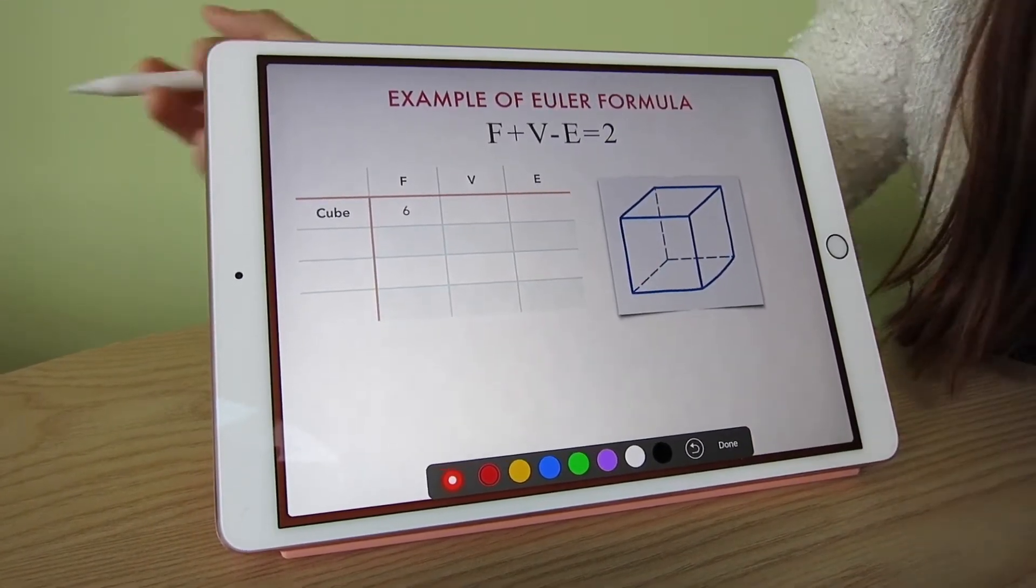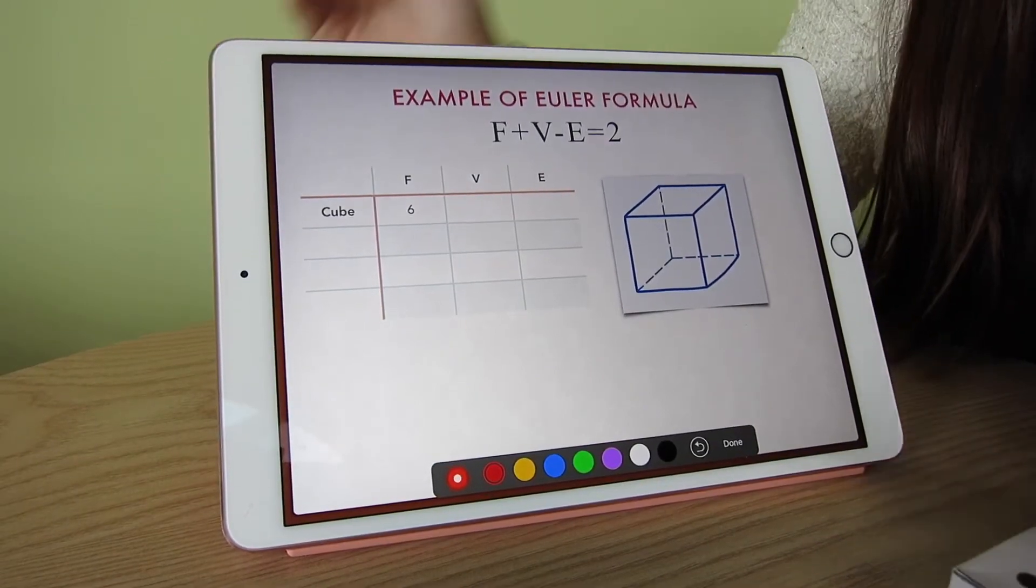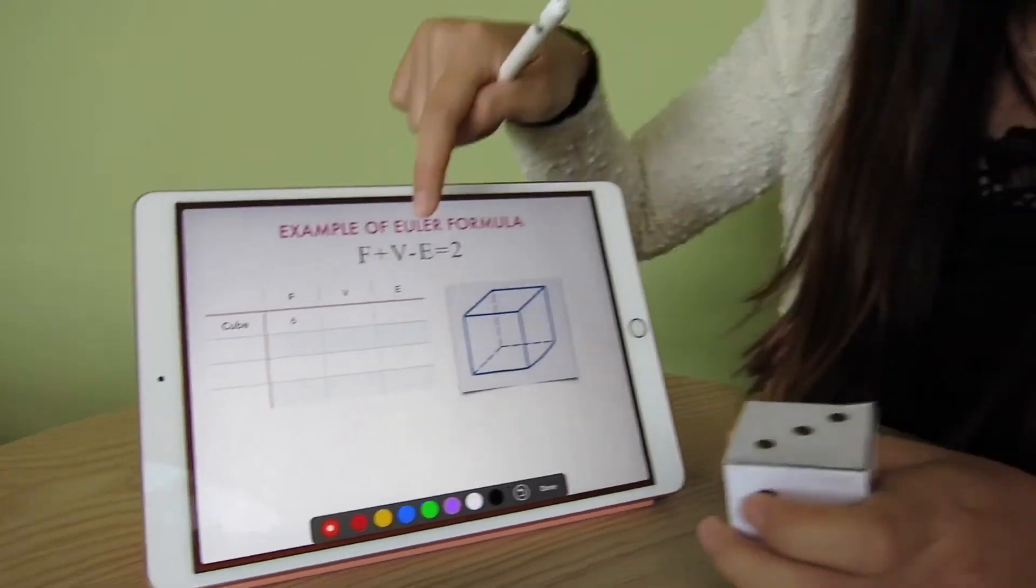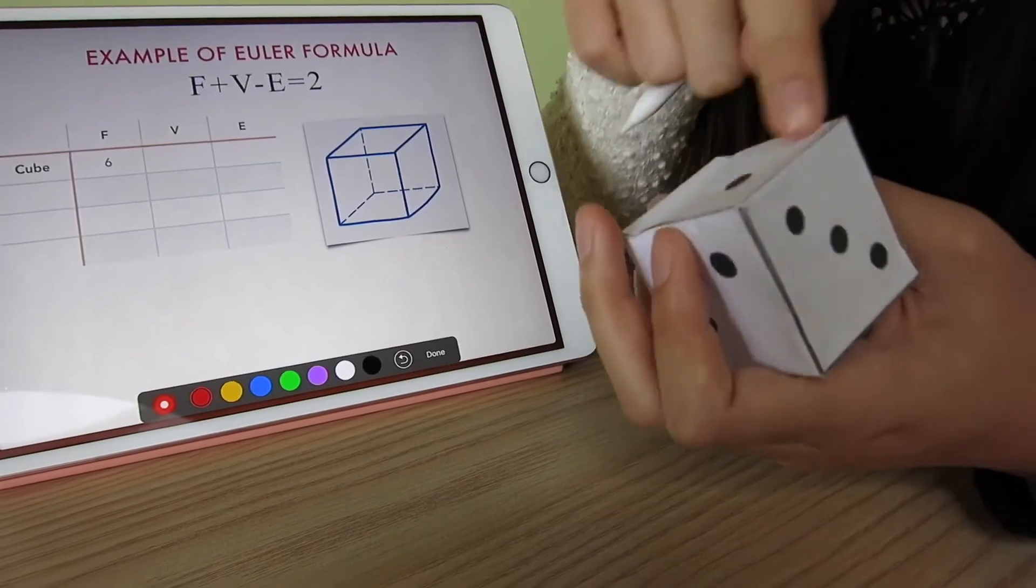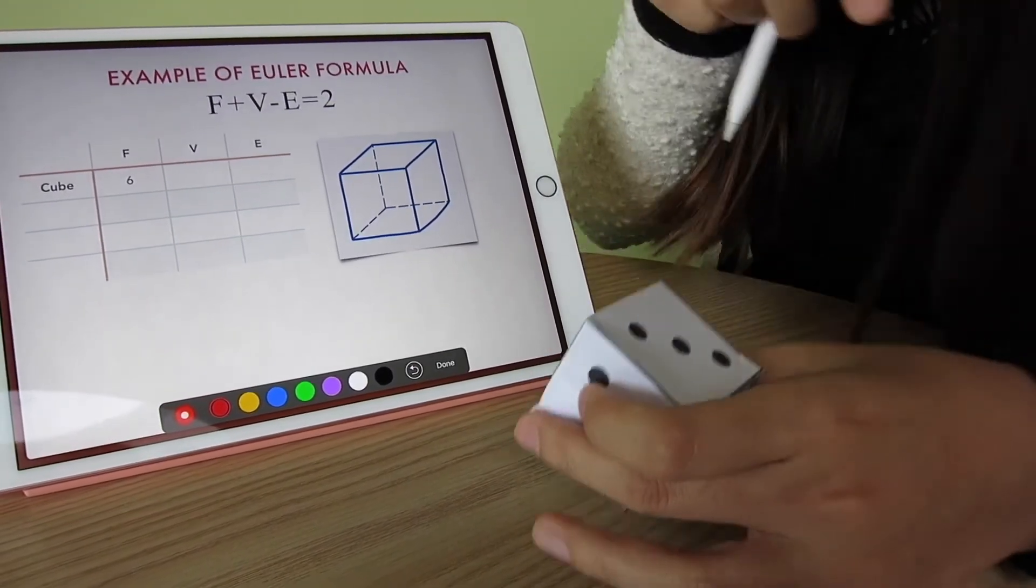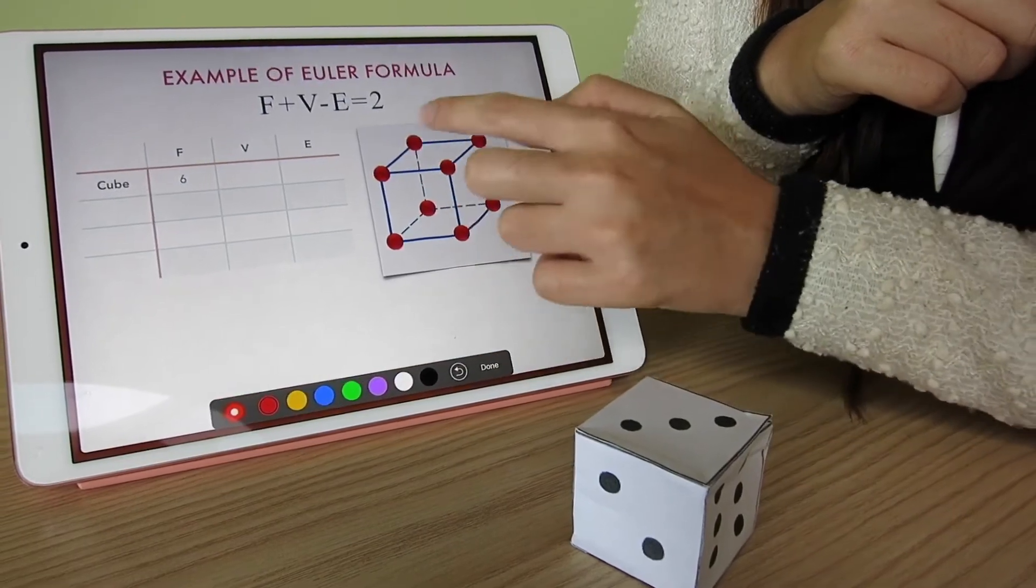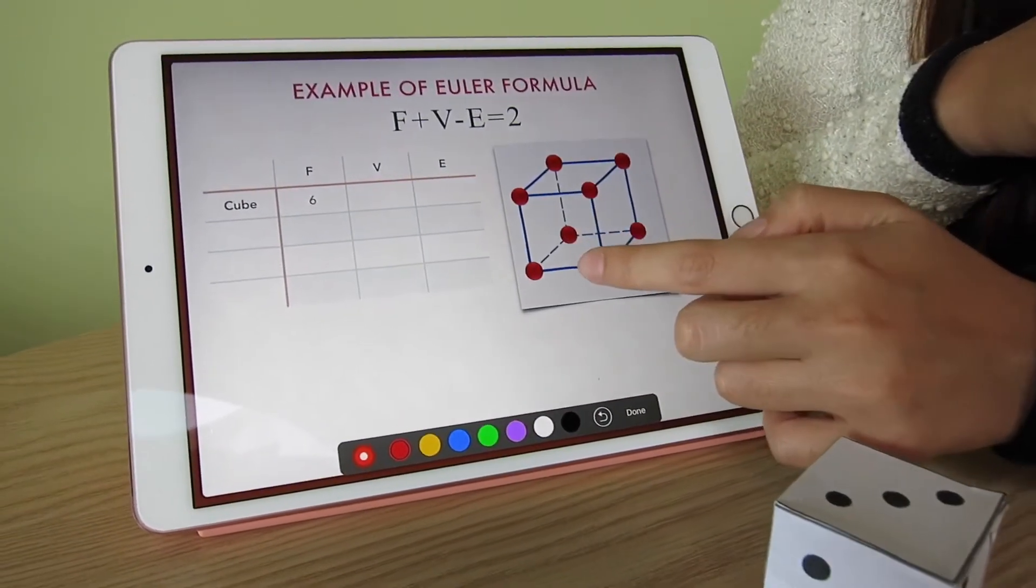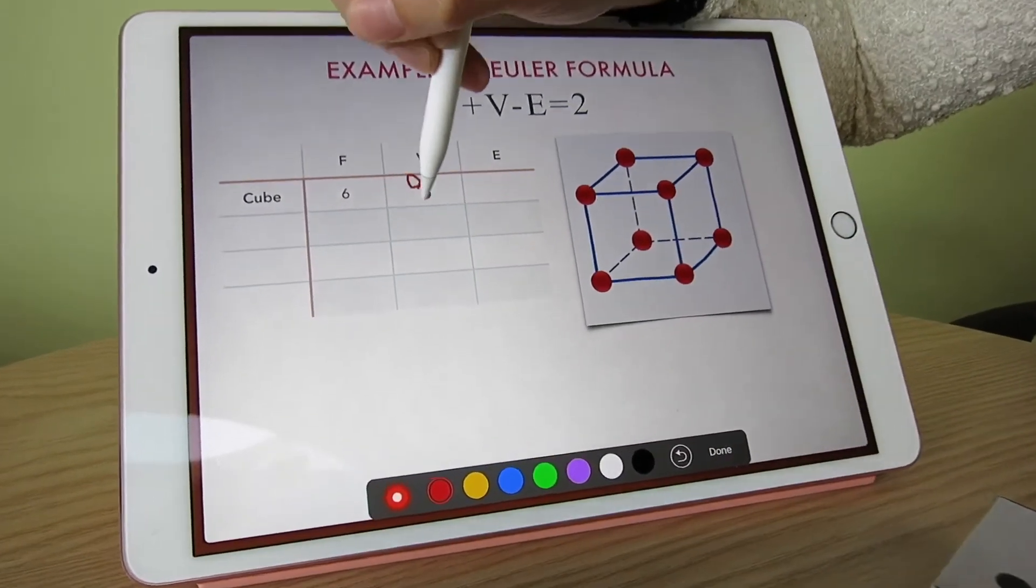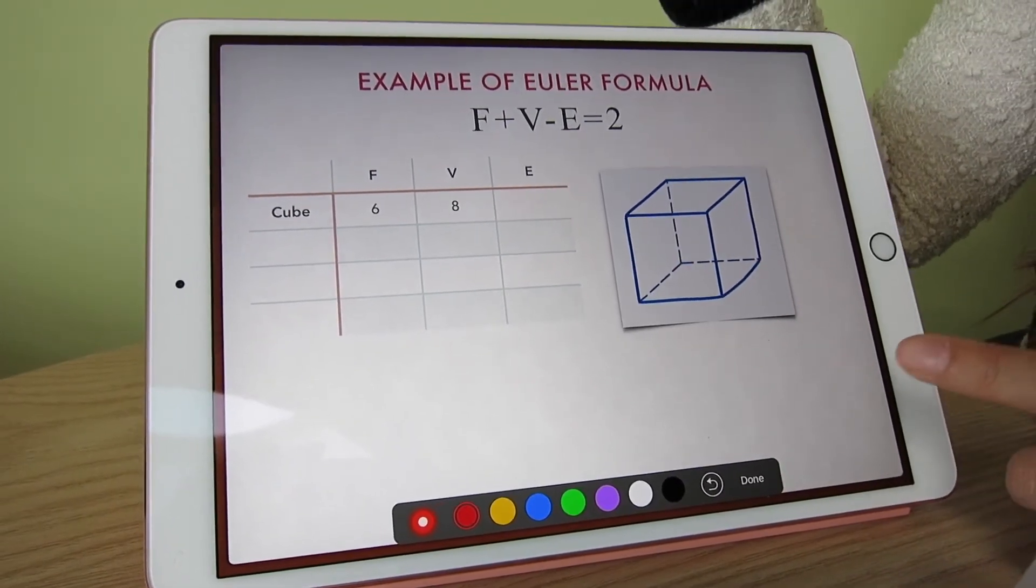For vertex, what does it mean? Vertex means V—it's like a V shape. It means a sharp point here for vertex. We have 1, 2, 3, 4 for the upper one, 4 more for the lower one, so in total we have 8 vertices.